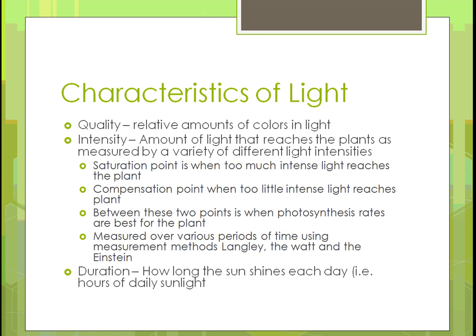The qualities of light that affect how plants grow include: quality — the relative amounts, whether it's full sun or part sun; intensity — how hot it is, which varies by time of year; and duration — how many hours of sunlight per day and the time of year. There is a saturation point when too much sun reaches a plant, a compensation point when there's not enough, and in between is the optimal point at which photosynthesis occurs best.